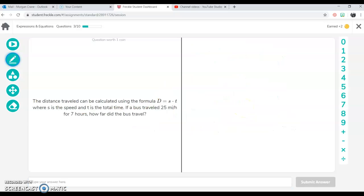All right. Here's a little bit of a different problem. So the distance traveled can be calculated using this formula. Distance equals speed times time. That's what that's saying. So S equals speed and T is for your total time. A bus traveled 25 miles an hour for seven hours. We know that 25 miles an hour is going to equal to speed and total time was seven hours. So that equals T.